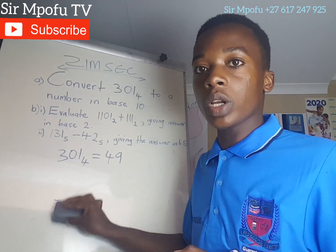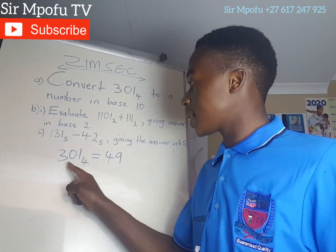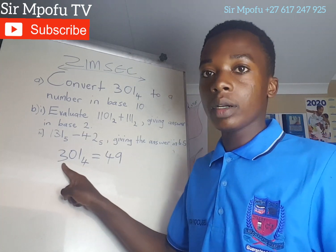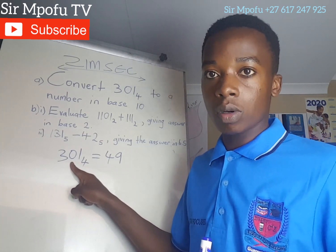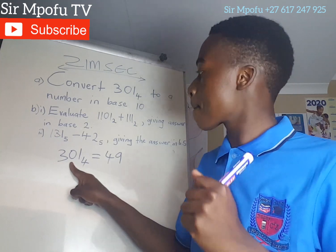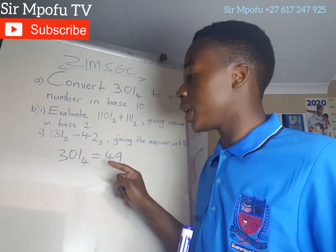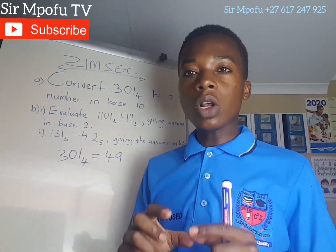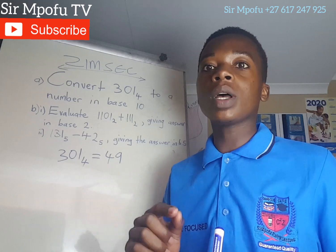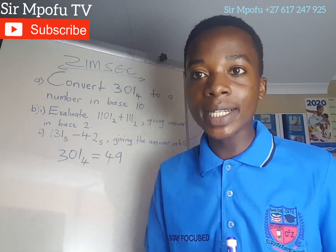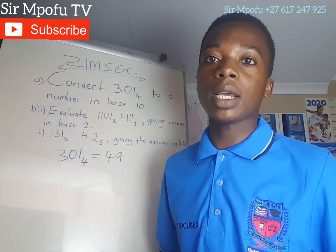Let me explain this again. 4 times 3 is 12. 12 plus 0 is 12. Then 12 times 4 is 48. 48 plus 1 is 49. You can also use another method, as shown in a previous YouTube channel video — the easiest way to convert number bases from any base to base 10.